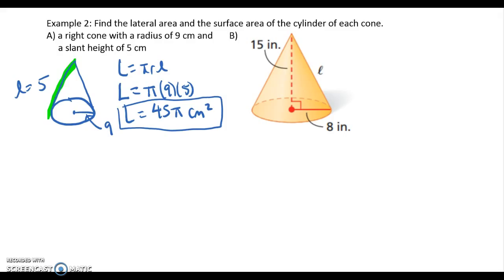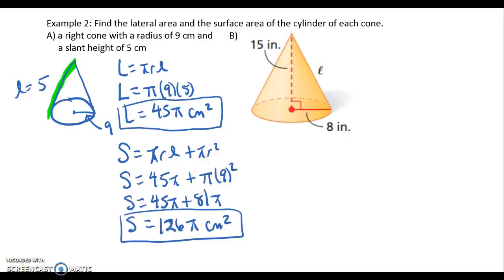That's lateral area, we're not done because you also have to find surface area. So surface area is pi r l plus pi r squared. And we already found pi r l. So that's 45 pi. Let's add that to pi r squared. Did you get 126 pi square centimeters? Well, that's what we're aiming for.